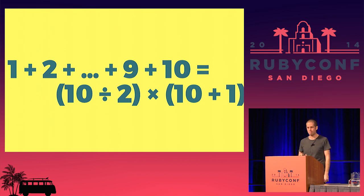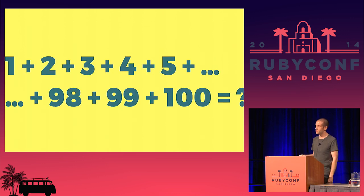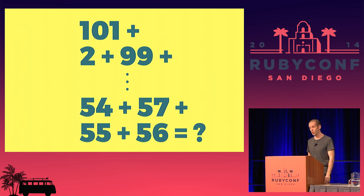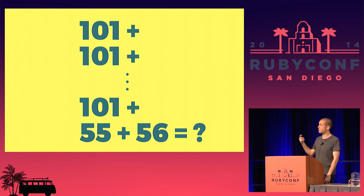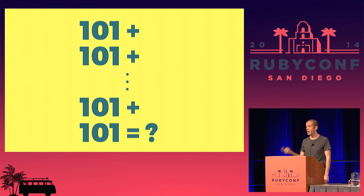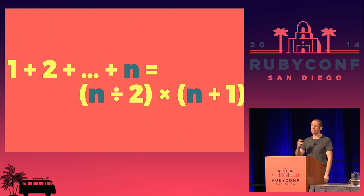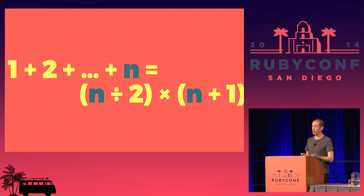This is what Gauss ostensibly realized — or in particular, he realized we can do the same thing for the numbers up to 100. We can rewrite the sum as 1 plus 100, plus 2 plus 99, all the way up to 54 plus 57, plus 55 plus 56. Each pair adds up to 101. There are 100 numbers, so there must be 50 pairs. 50 times 101 is 5,050. So here's the secret: the sum of all the numbers up to any whole number n is half of n times the number one greater than n. If n is odd, you get something-and-a-half on the left, but you'll be multiplying by an even number n plus 1, so the half goes away again.